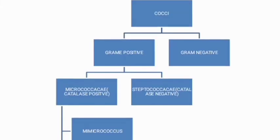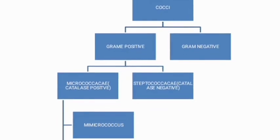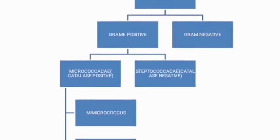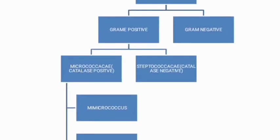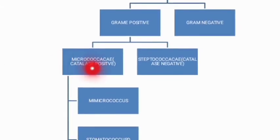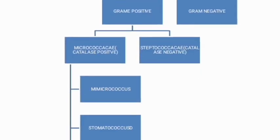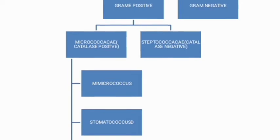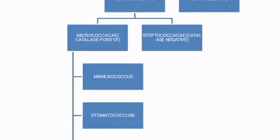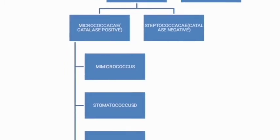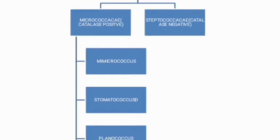Welcome back to Akila Tutorials. In this video we are going to learn about Staphylococcus. First, cocci bacteria are classified into two types: gram positive cocci and gram negative cocci. Gram positive cocci bacteria are classified into two families: Micrococcaceae and Streptococcaceae. These two are differentiated by the catalase test. Micrococcaceae are catalase positive and arranged in tetrads or clusters.